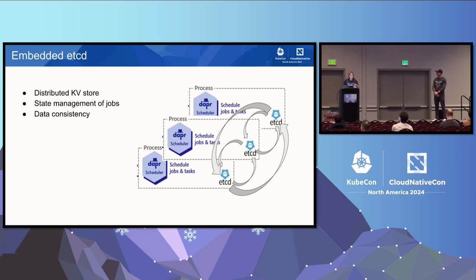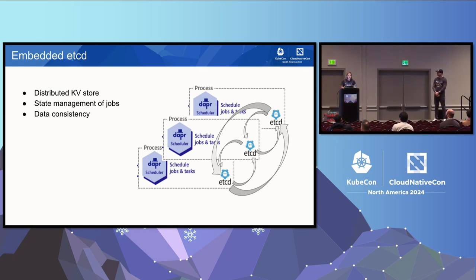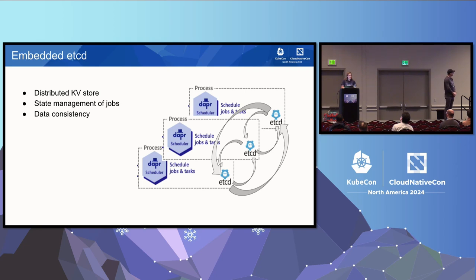The embedded etcd is in our scheduler. etcd is a distributed key-value store and that is where our jobs live. When you schedule a job, it lives in etcd. At trigger time, we have the cron library helping to facilitate things. With etcd we get data consistency and replication out of the box — the etcd instances communicate with each other running Raft under the hood and maintaining the quorum. Every single scheduler has the complete set of all jobs, and we're persisting data by default, so if all schedulers go down our data is persisted.